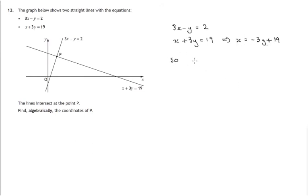So we've got a value for x in terms of y. So now using the first equation, 3x minus y equals 2, what does that become? If we replace x by this negative 3y plus 19. So instead of 3 lots of x, we've got 3 lots of minus 3y plus 19. So let's get rid of the brackets here.